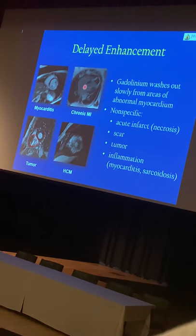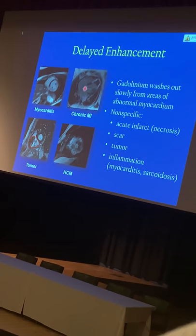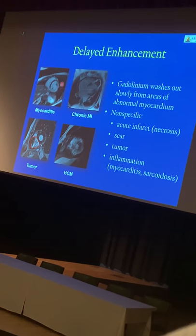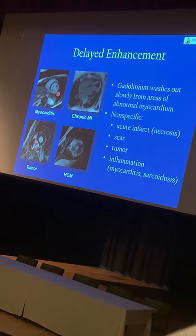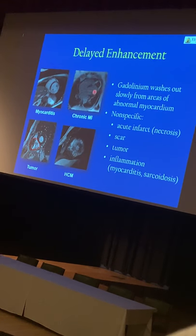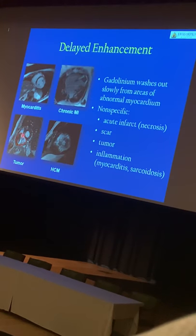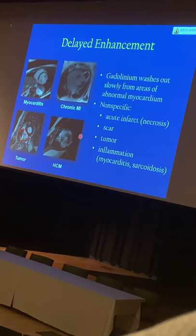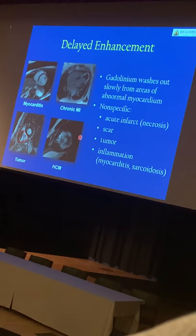Delayed enhancement is not specific for myocardial infarction. You can see it in myocarditis, in which we showed earlier that there was abnormal T2 or edema signal, and in the corresponding segment there's abnormal delayed enhancement. This is a patient with a chronic MRI in which you see delayed enhancement at the apex and a black blob sitting at the apex, because the heart is not moving normally. Here you have a tumor, and here you have a very heterogeneous diffuse enhancement of the heart in a patient with hypertrophic cardiomyopathy.